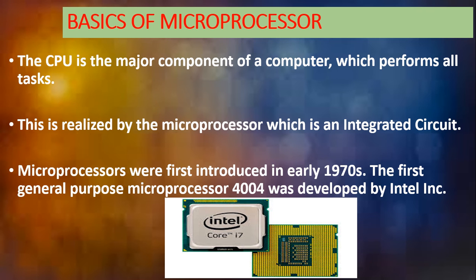Microprocessors were first introduced in the early 1970s. The first general-purpose microprocessor was the Intel 4004. Now we have Intel Pentium, Intel Core, Dual Core, i7, i10 — great modern versions of the microprocessor. The first microprocessor, the 4004, was introduced by Intel.